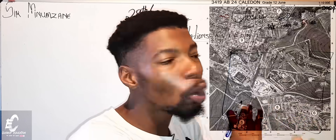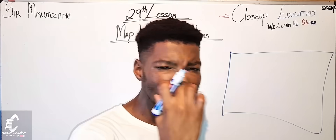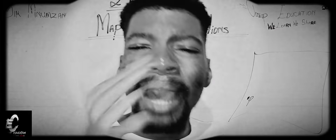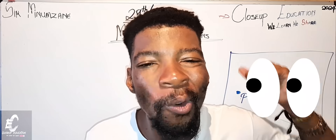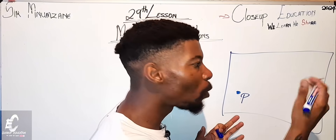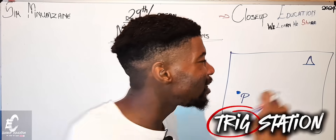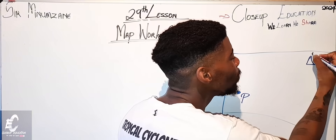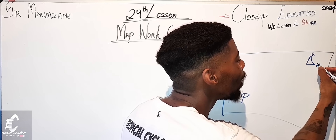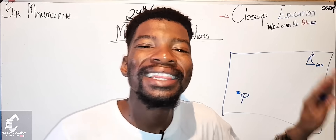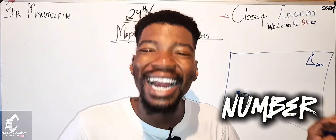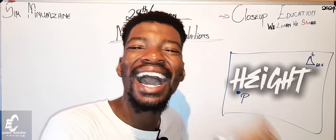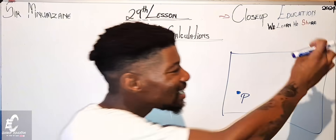So here is our map. Let's say this is our post office and this is our trig station height. These symbols tell us the altitude of that particular area — there will be a number on top which is the trig station number, and a number at the bottom which is the trig station height. They might ask you to tell them the distance from the post office to trig station number six.